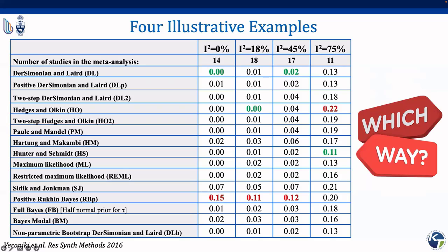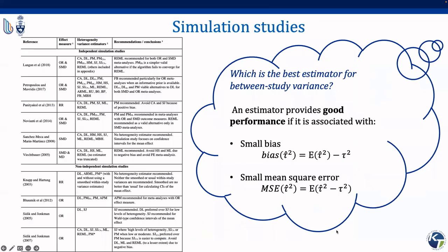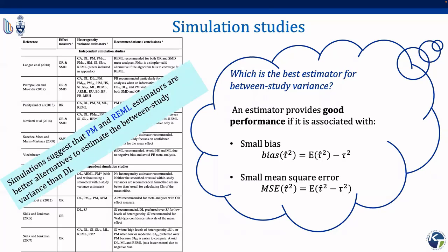We combined the aggregated data using a random effects model with different heterogeneity estimation methods. In the results table, the lowest estimated heterogeneity value is highlighted in green and the highest in red. As you can see, the estimated heterogeneity value can vary considerably among the methods. To infer on which is the best estimator, we summarized results from published statistical simulation studies. Overall, simulations suggest that the Paule-Mandel and restricted maximum likelihood estimators are better alternatives than the DerSimonian-Laird for estimating between-study variance, based on bias and mean squared error.